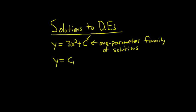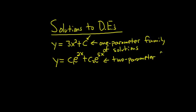Say you had something like c₁e^(2x) plus c₂e^(5x). This would be called a two-parameter family of solutions. You have infinitely many solutions again — all you have to do is pick the c's.